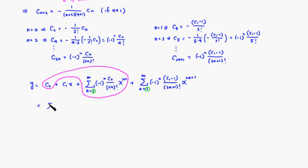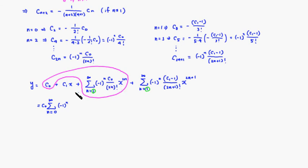So combining those, we can start from n equals 0 to infinity and pull c0 outside, giving c0 times the summation from n equals 0 to infinity of negative 1 to the n times x to the 2n over 2n factorial.